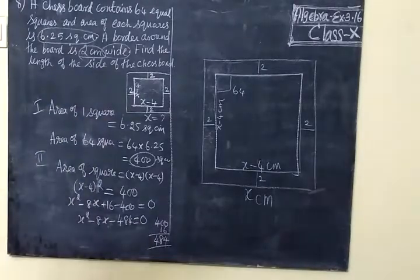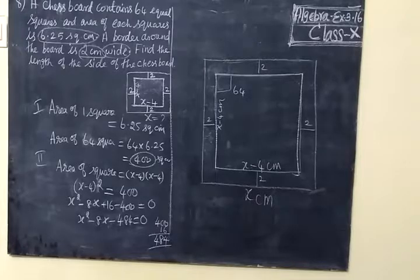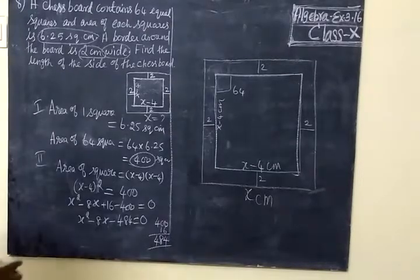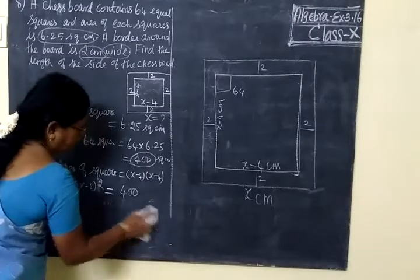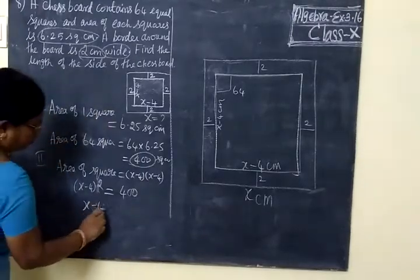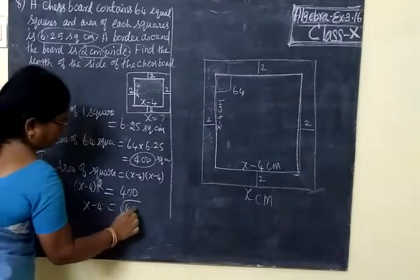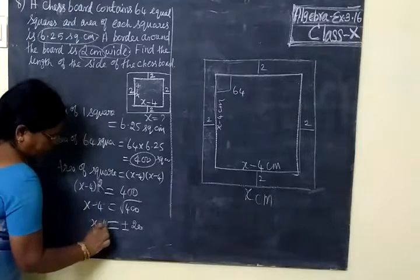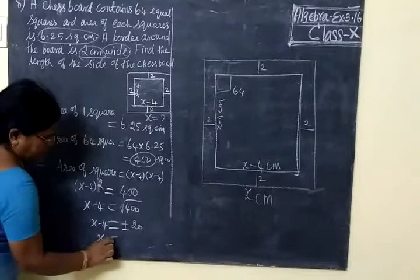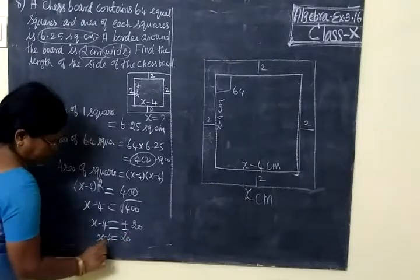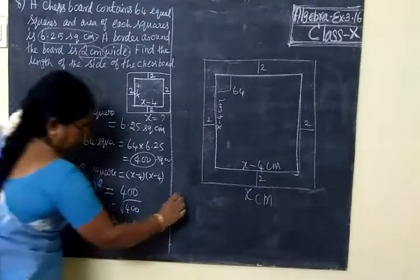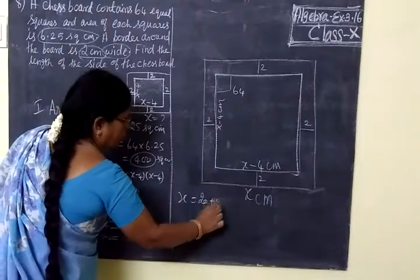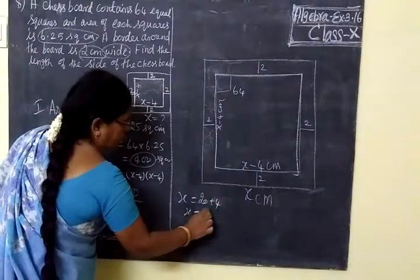So we are getting the quadratic equation. x minus 4 equals root of 400. So this is equal to plus or minus 20. x is equal to 20 plus 4. So x is equal to 24.